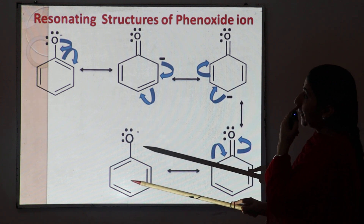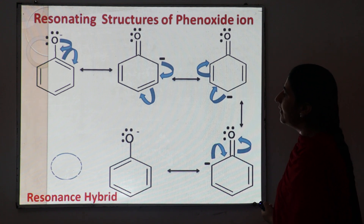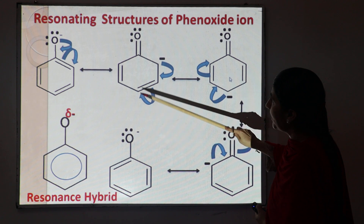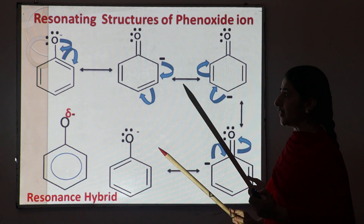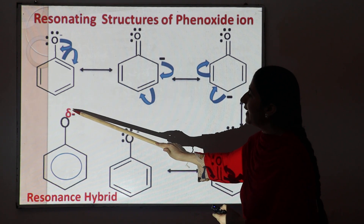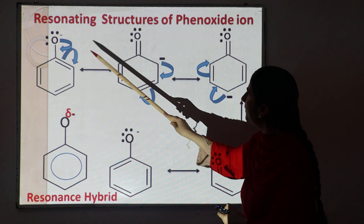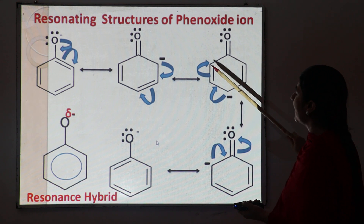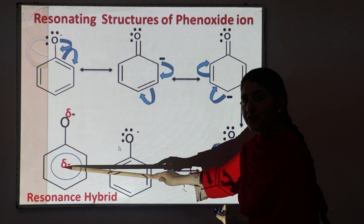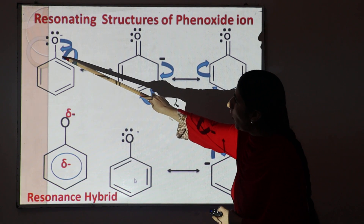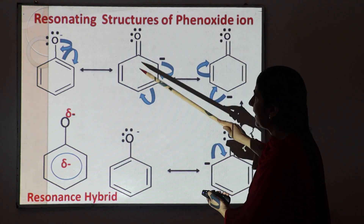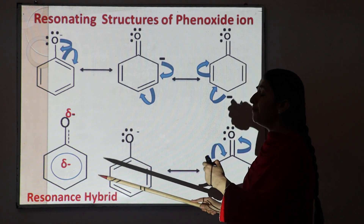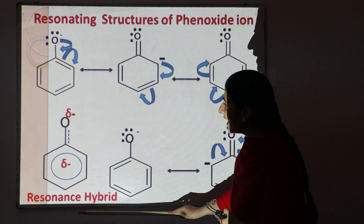Due to resonance, we get the resonance hybrid structure of phenoxide. In structures one and five, oxygen carries a negative charge, whereas in structures two, three, and four oxygen does not carry any charge — so in the hybrid structure oxygen carries a partial negative charge. For the benzene ring, structures one and five do not carry a charge, while two, three, and four carry negative charge, so benzene carries a partial negative charge. The C–O bond is neither single nor double but in between.